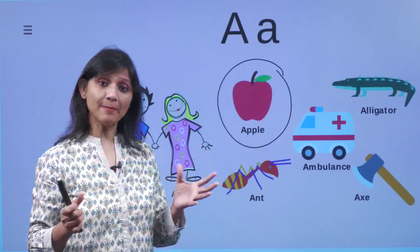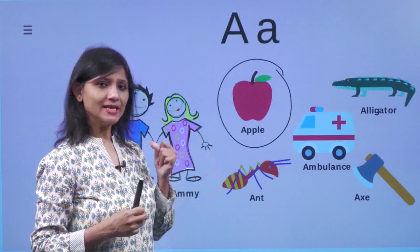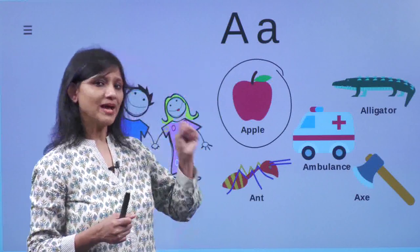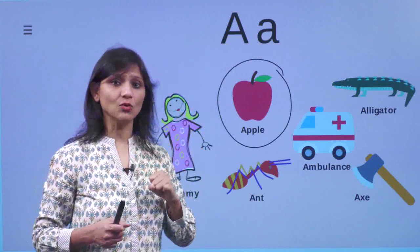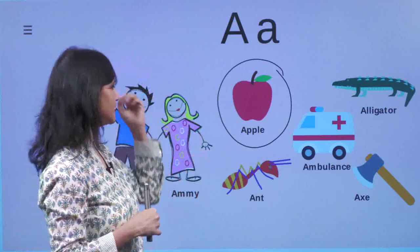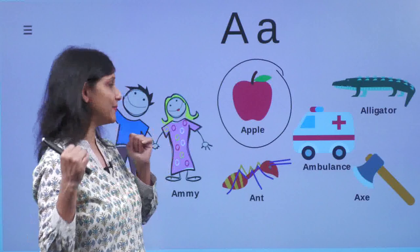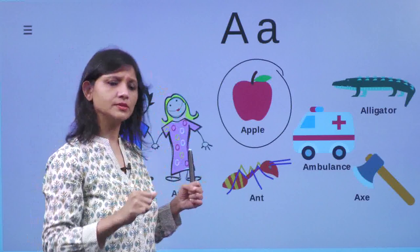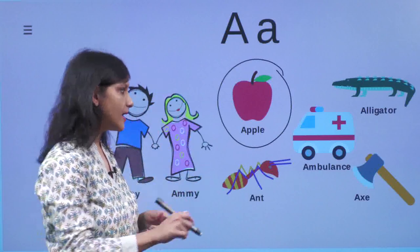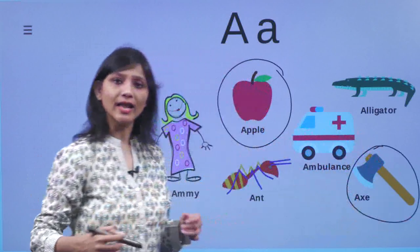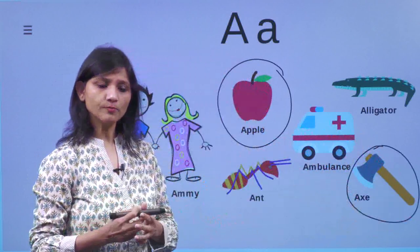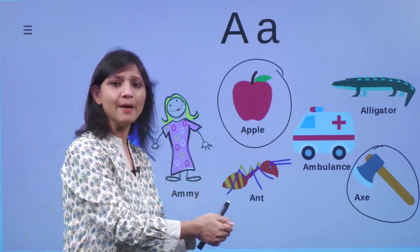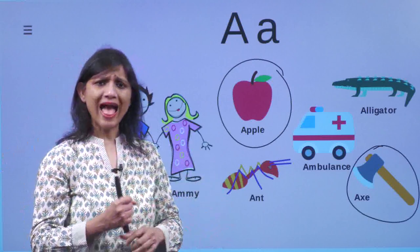Excitedly he told Ami, look, there is an apple tree. We can pluck the apples and eat those. Ami was really happy. They ran towards the apple tree. But Abby could not reach the apples. So he found an axe. His eyes fell on an axe. He took that axe and he was about to give a blow to the apple tree when suddenly, he started shouting.